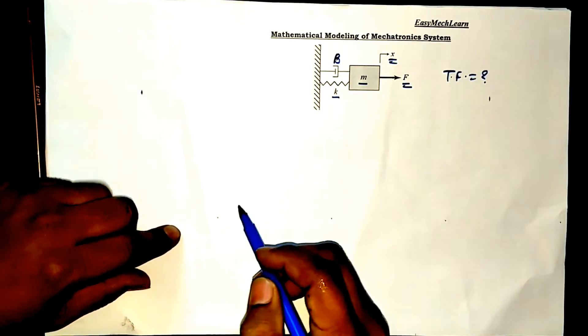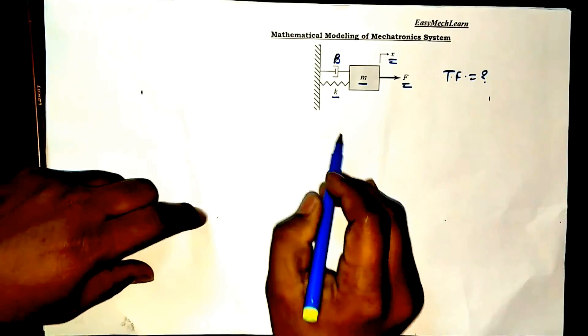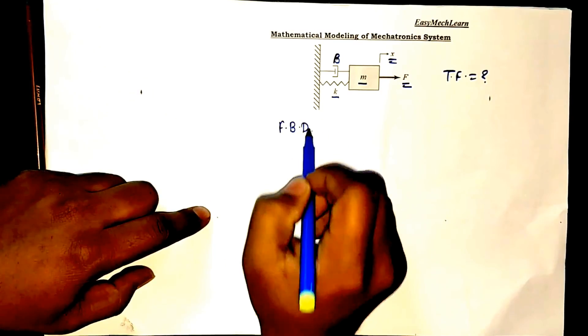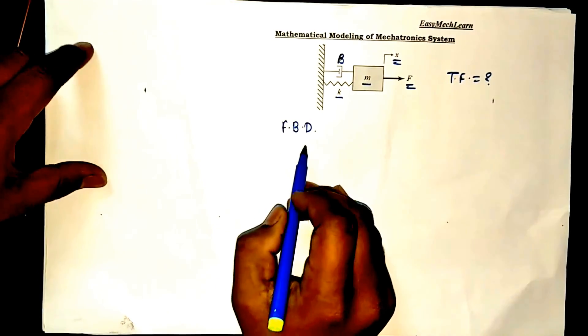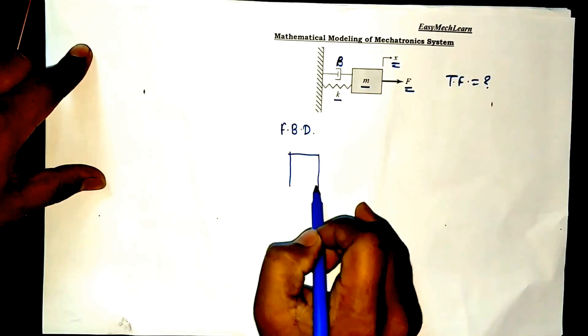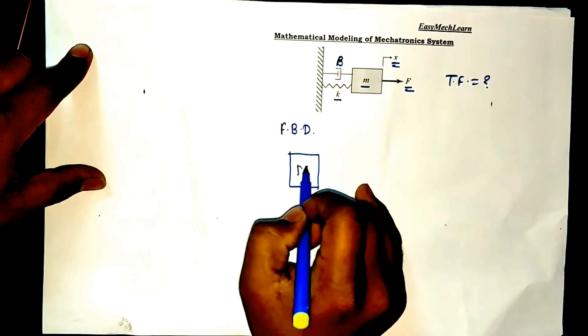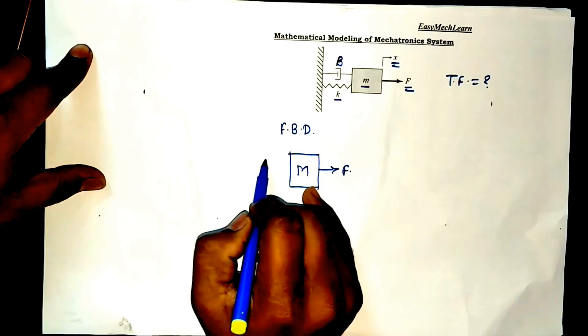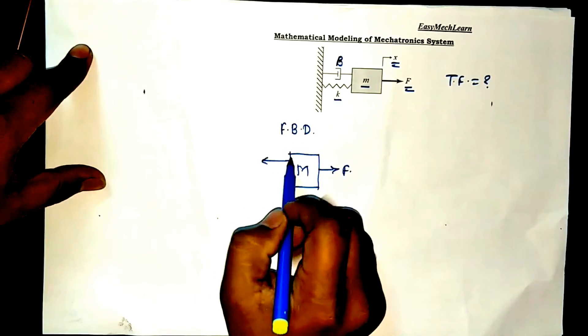First step for the mathematical model for mechanical system is draw free body diagram. This block consists of mass on which force F is acting. The damping force and spring force are acting opposite to the direction of displacement.